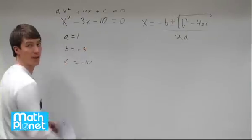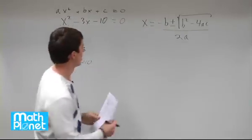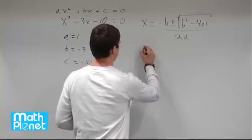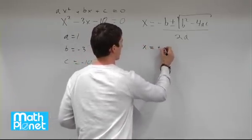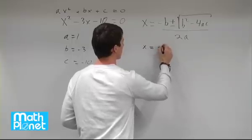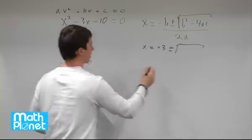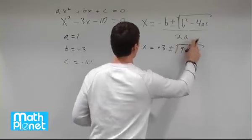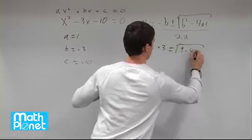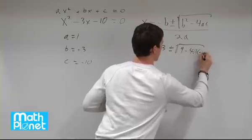We want to plug these three values in here, and we're going to get two answers because of this plus or minus and the square root. So let's plug that in and see what we get. Negative b—b is negative 3, so negative of negative is positive 3—plus or minus the square root of b squared. Negative 3 times negative 3 is 9, minus 4a, which is 1, and c, which is negative 10.